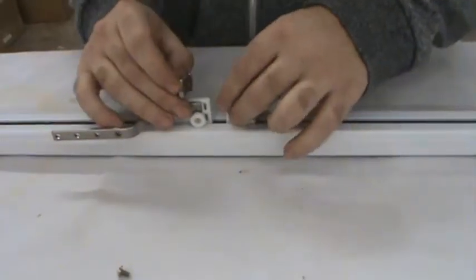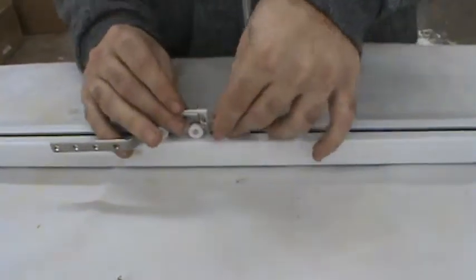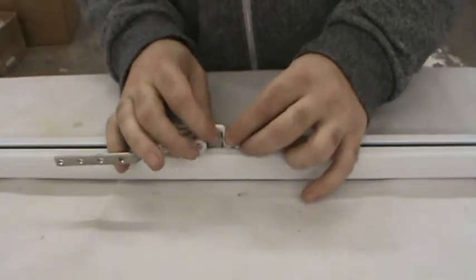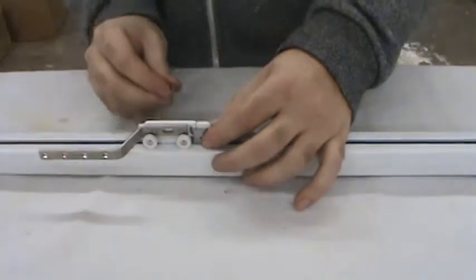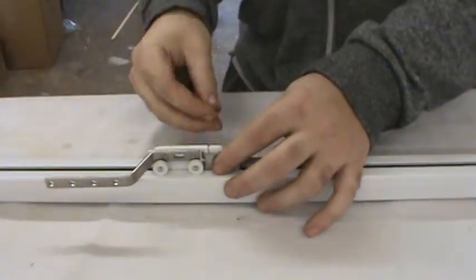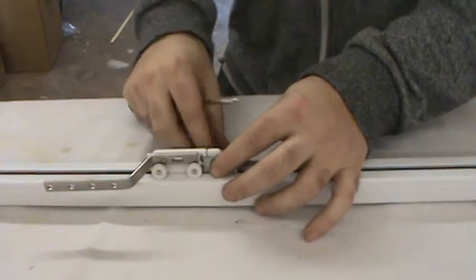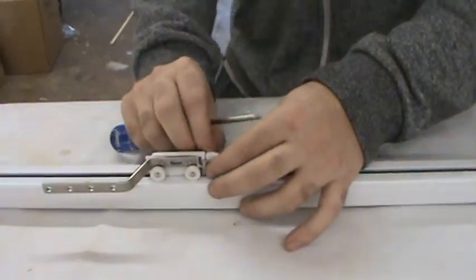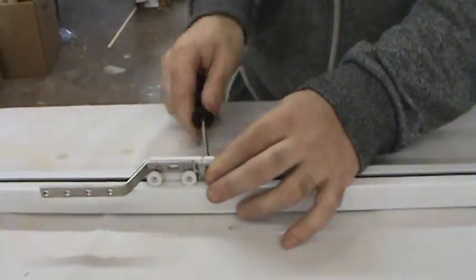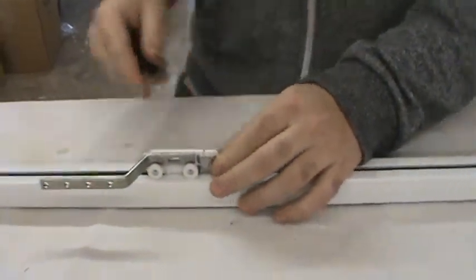So these just get spread apart. Hook goes on. Attach that to the other side. Screw screws in this side. And what this does is just holds the master carrier together.